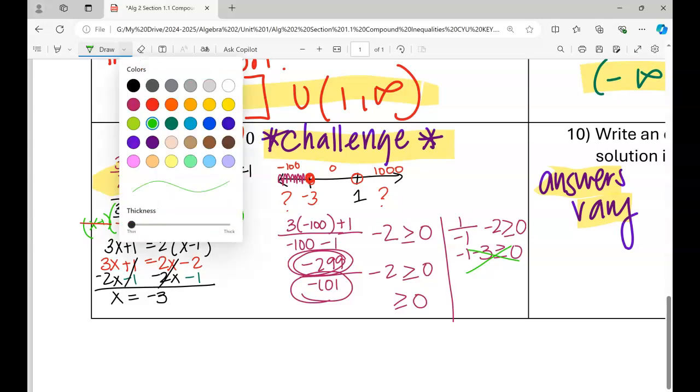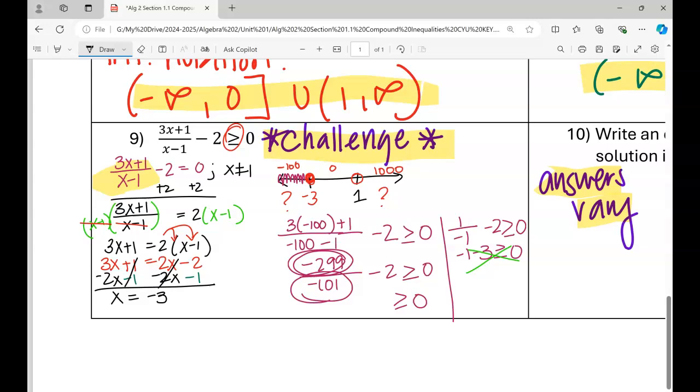Then we're going to pick something to the right, and when we test it, it's going to be true. When we plug in 1,000, 1,000 times 3 is 3,000. 3,000 plus 1 is 3,001, and 1,000 minus 1, that's sort of like 999. So when you have something close to 3,000 divided by something close to 1,000, that's going to give us 3. And 3 minus 2 is definitely something positive, going to be bigger than or equal to 0. So on the right side, it's also true.